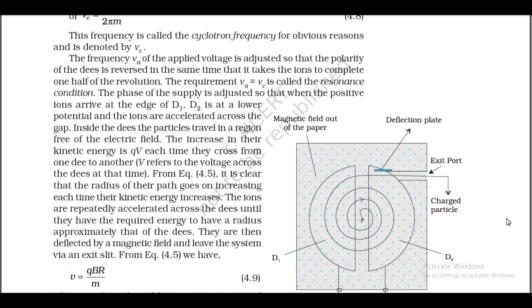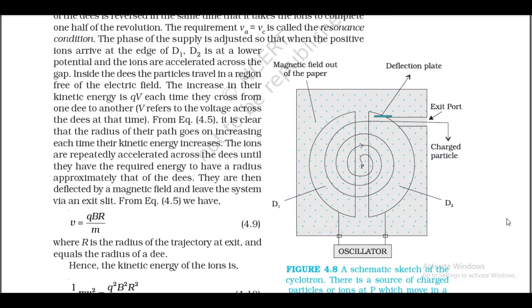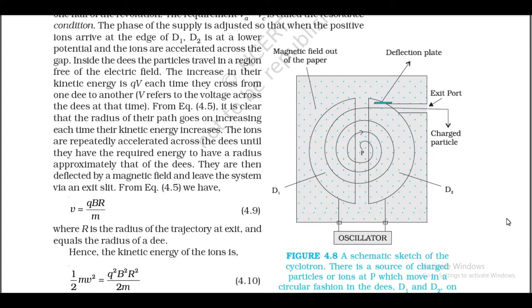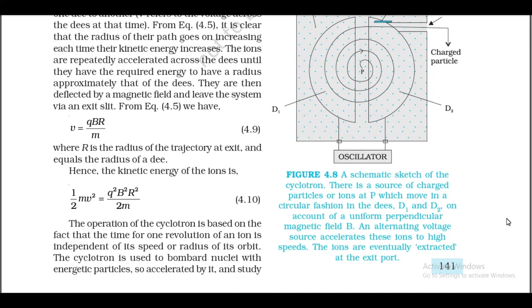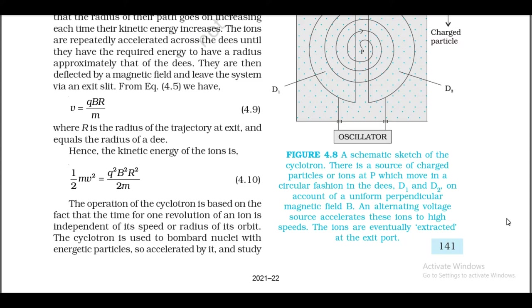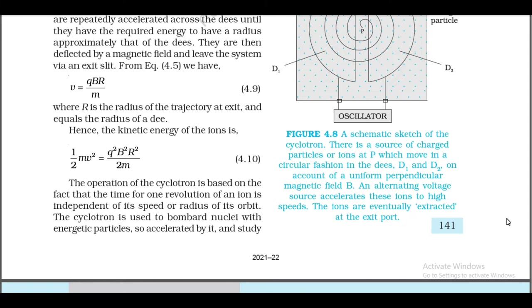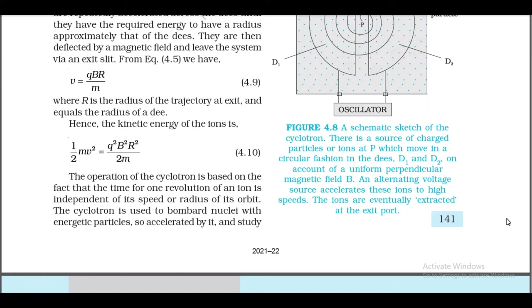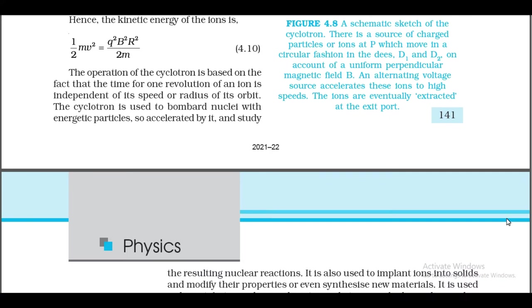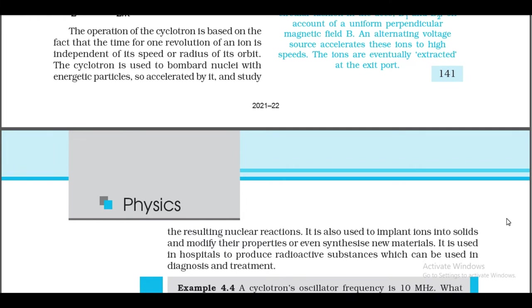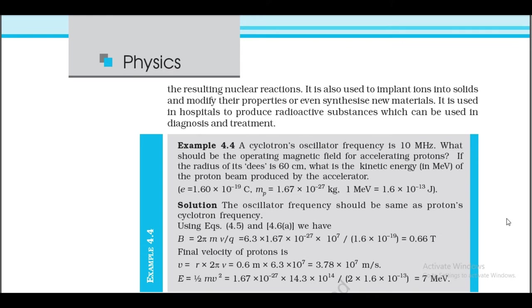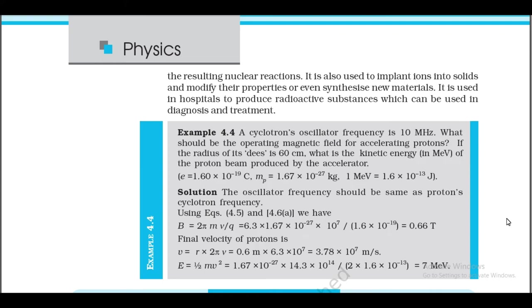The ions are then deflected by a magnetic field and leave the system via an exit slit. From equation 4.5, v = qBr/m, where r is the radius of the trajectory at exit (equal to the radius of a dee). Hence the kinetic energy of the ions is ½mv² = q²B²r²/(2m). The operation of the cyclotron is based on the fact that the time for one revolution of an ion is independent of its speed or radius of orbit. The cyclotron is used to bombard nuclei with energetic particles, to implant ions into solids and modify their properties or synthesize new materials, and in hospitals to produce radioactive substances for diagnosis and treatment.